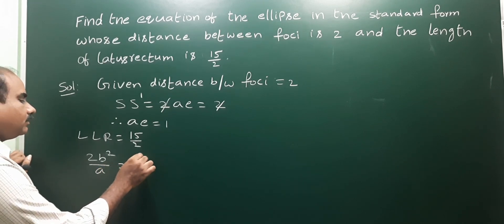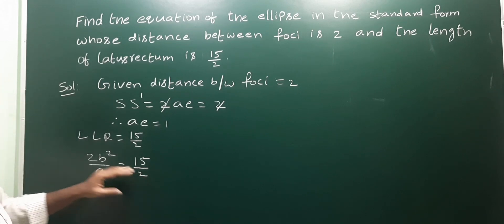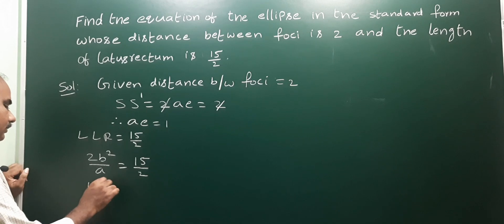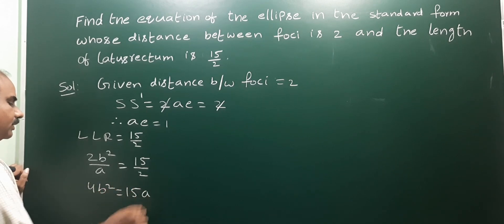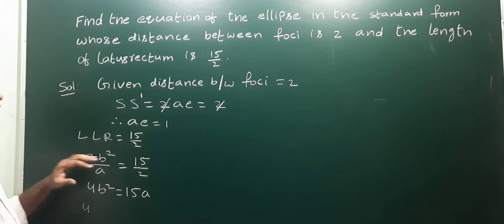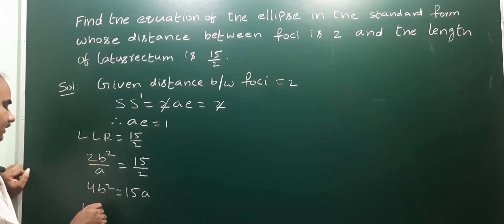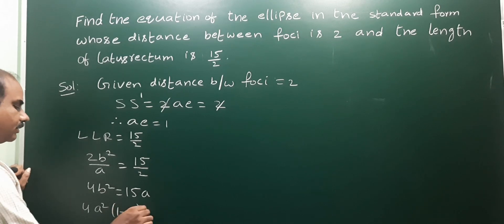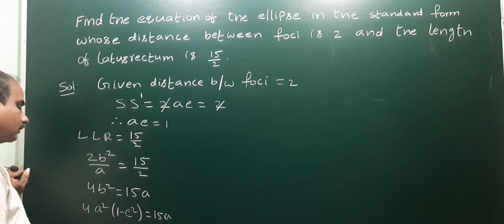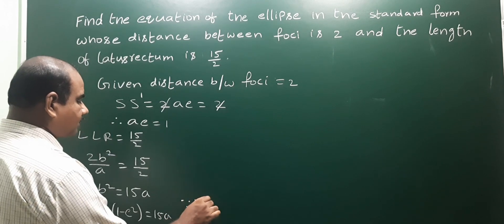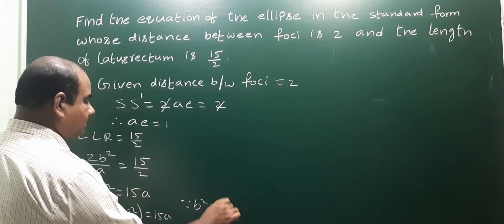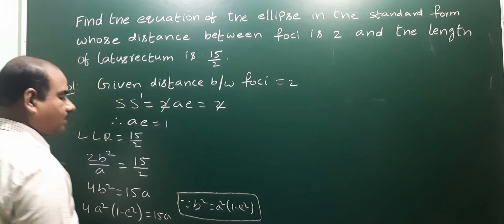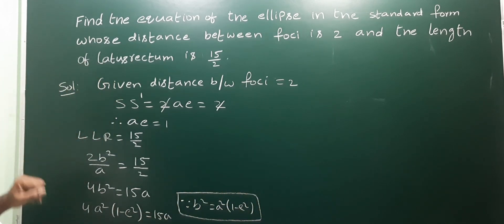Setting 2b²/a = 15/2 and cross multiplying gives 4b² = 15a. Since b² = a²(1 - e²), substituting we get 4a²(1 - e²) = 15a.